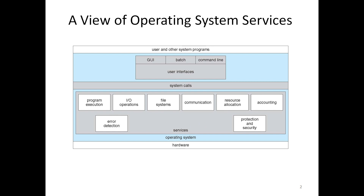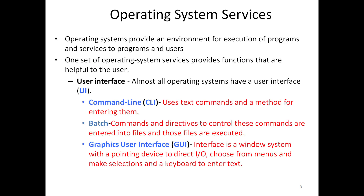We are going to see each one in detail. Apart from that, the OS provides various user interfaces — it provides a platform for application programs to run. There are three user interfaces: one is a command line interface, second is a batch interface, and third is a GUI, which means graphical user interface.